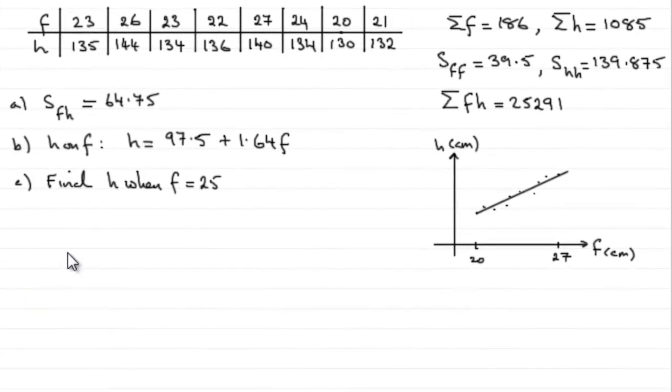Now for part C, what we've got to do is find the height when the foot length is 25 centimeters. And what I've done here is just drawn a sketch of the regression line of H on F, which goes from 20 to 27, that's the lowest value here to the highest value in the table.